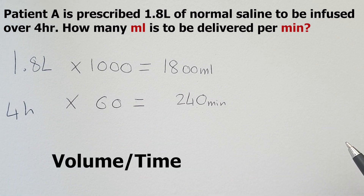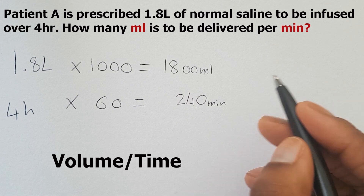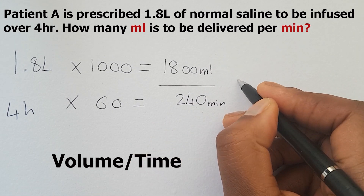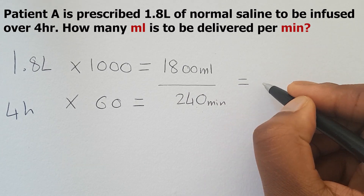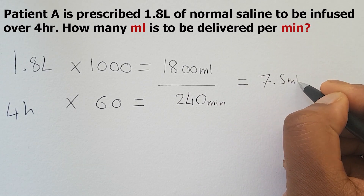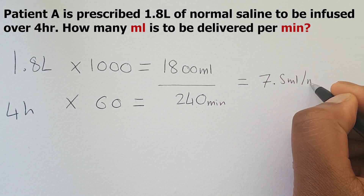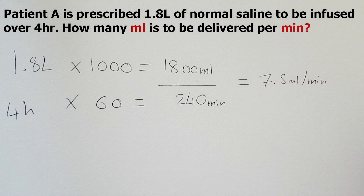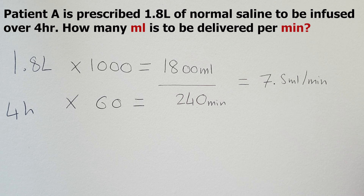Flow rate is simply volume divided by time, so it would be 1,800 divided by 240, which gives us the answer of 7.5 mils per minute. In order for the patient to be infused 1.8 litres over 4 hours, we will need to set the flow rate to 7.5 mils per minute.